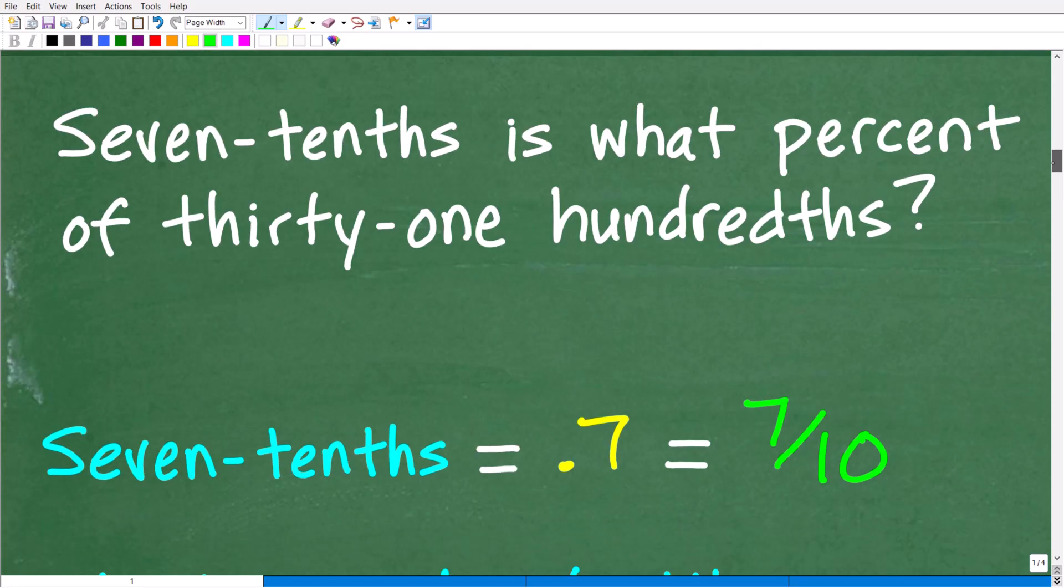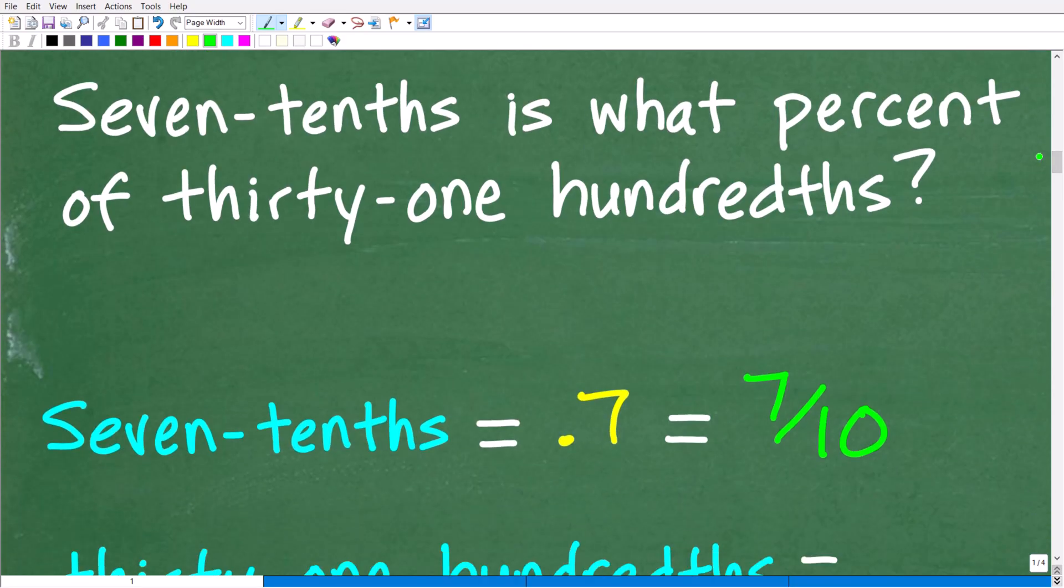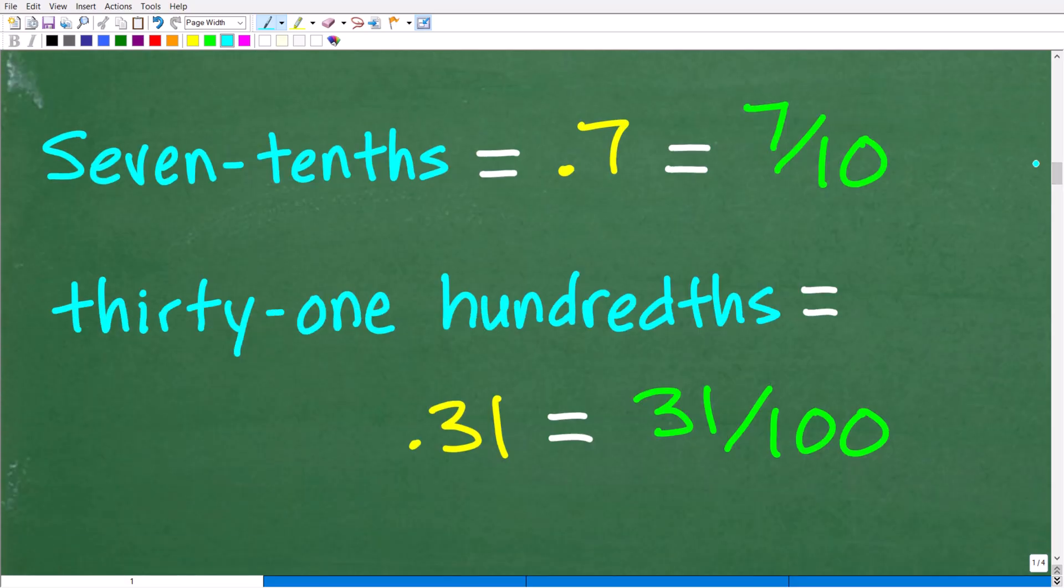So here's our question. Seven tenths is what percent of 31 hundredths? Well let's go ahead and take a look at each of these values and just use our new kind of knowledge of place value. And of course it's not new for most of us. Most of us remember this, unless you're learning it for the first time. All right, so seven tenths. Seven tenths is what? Well we're going to write 0.7, right, because that's seven tenths. This is in the tenth spot. But seven tenths, you can also think of as the fraction seven over ten.